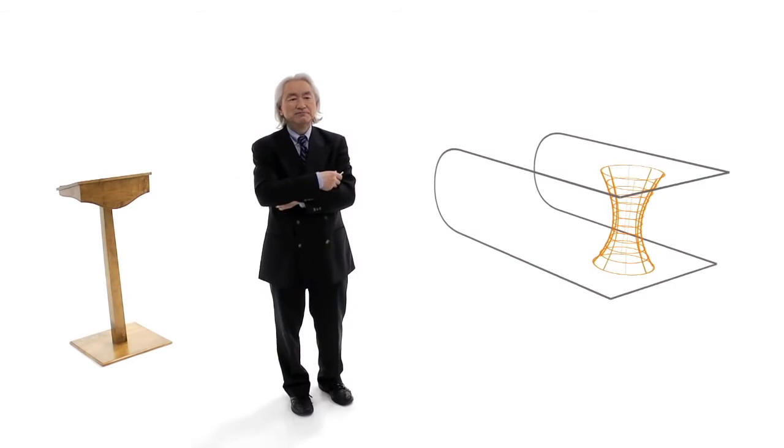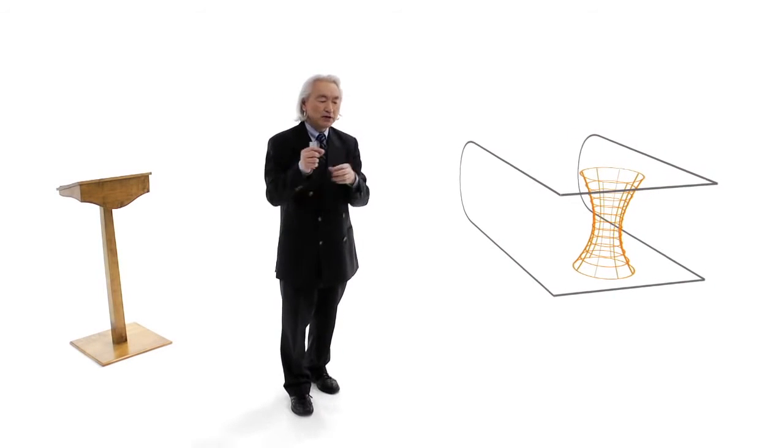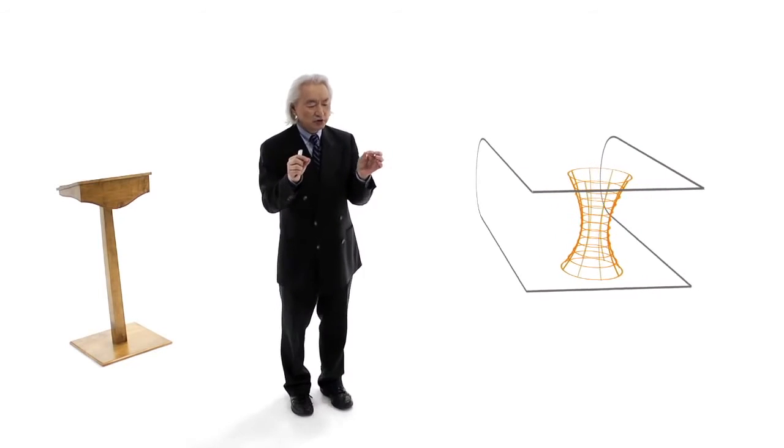This is a wormhole. Think of taking a sheet of paper and putting two dots on it. The shortest distance between two points is a straight line. But if I can fold, if I can fold that sheet of paper,